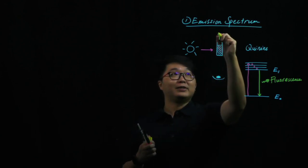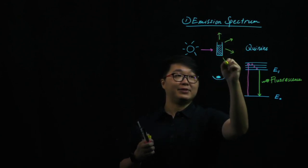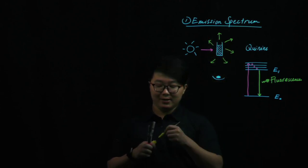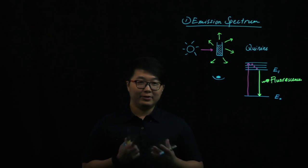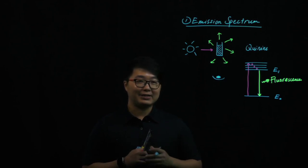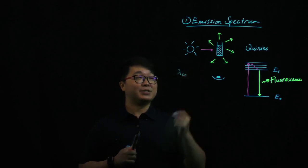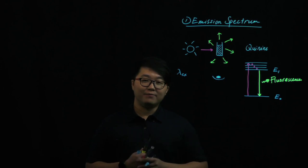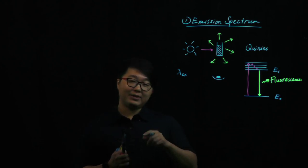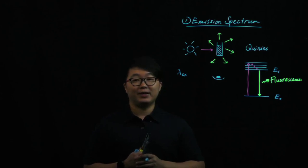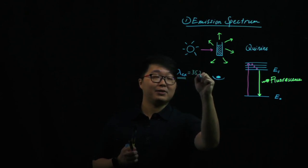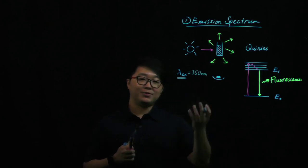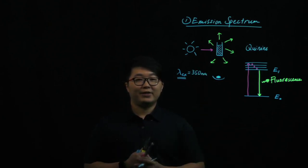Fluorescence is actually emitted in all directions, 360 degrees. We place our detector at the right angle, or we can place it at any other angle, as long as it's not directly capturing the incident light. In the first part of this experiment, we are asked to set an arbitrary excitation wavelength in order to measure the emission spectrum of crinine. We can make a more informed choice by looking at the UV absorption spectrum of crinine, finding the absorption maximum and choosing that as our excitation wavelength — let's say we find that to be about 350 nm.